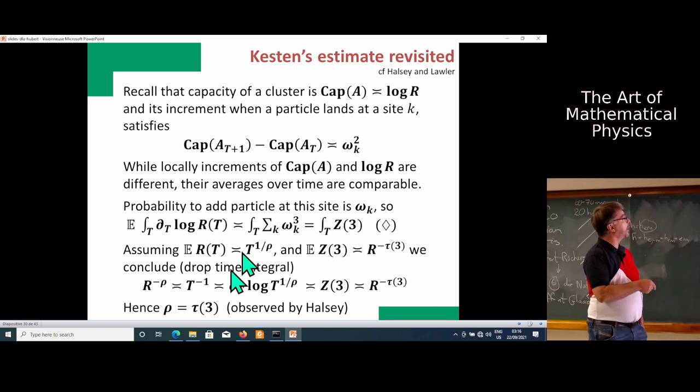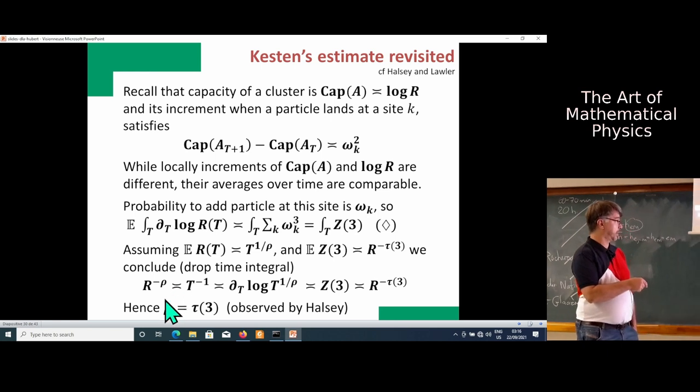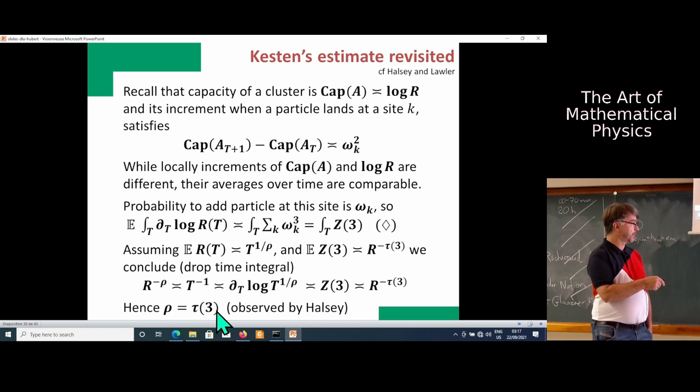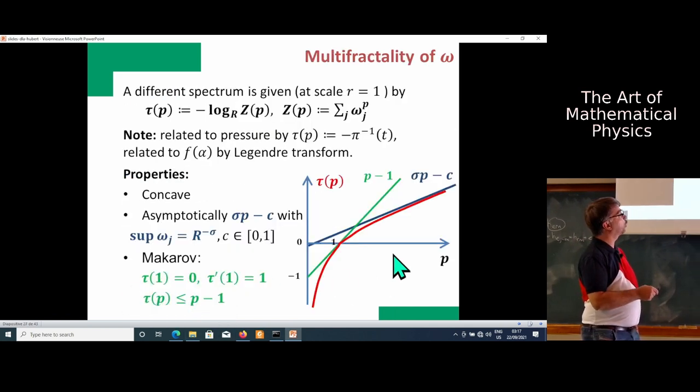If we assume that radius is t to the power 1 over rho and assume that z3 is r to the power minus tau of 3, then we get that dimension is equal to tau of 3. This was un-rigorously observed by Halsey. What is really interesting is that normally if you work with spectrums, the dimension would be the intersection of this red graph with the vertical line. But in the particular case of DLA, it's actually also equal to tau of 3, which is sort of a weird thing.